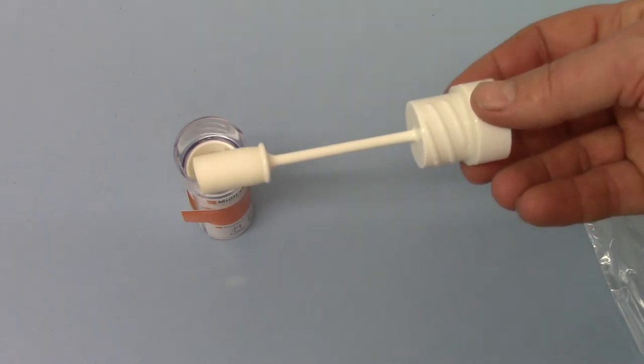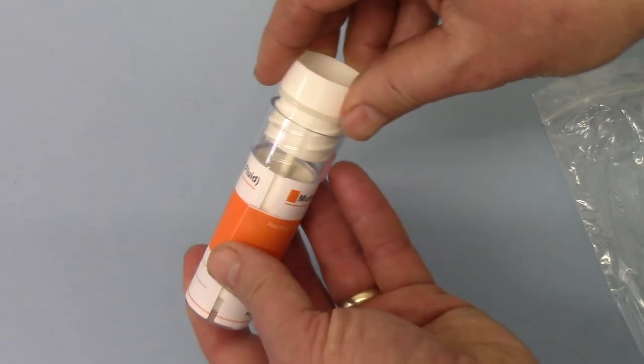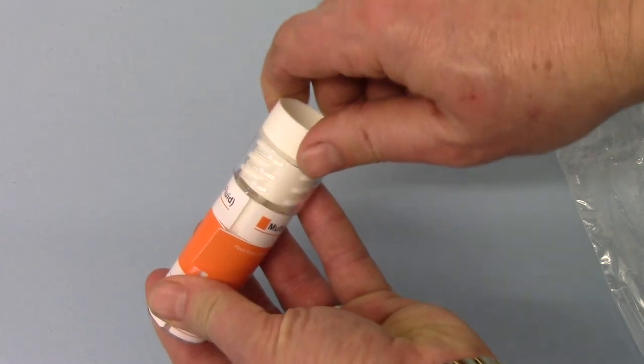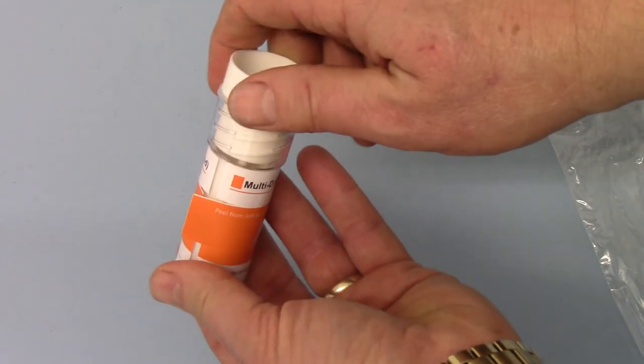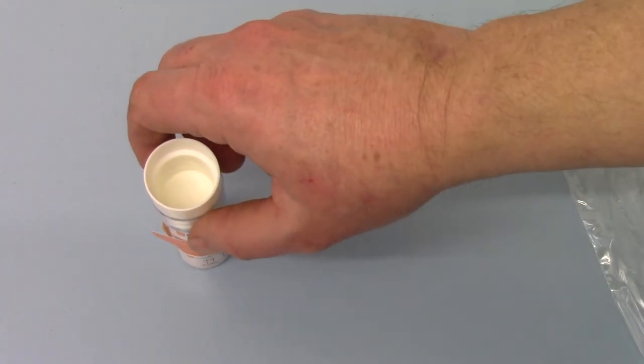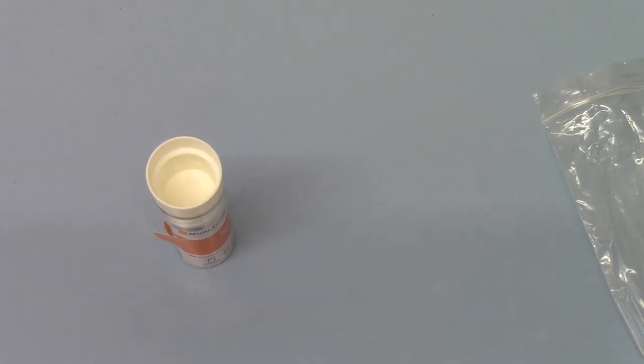And then to run the test, you simply put the swab into the barrel and lock down. Put it upright, and you now read that test at between 5 and 10 minutes.